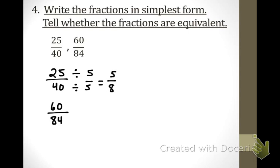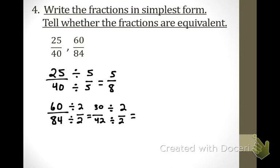Let's go to the next one: 60 over 84. We could divide by 2 on top and 2 on bottom — be fair, whatever you do to the top, you do to the bottom. That gives 30 over 42. Is this as simple as it can get? No. What can go into 30 that can also go into 42? I hear 3 and I hear 2 — either one could work. Dividing by 2 gives 15 over 21. Can that be reduced? Yes — divide by 3, giving 5 sevenths.